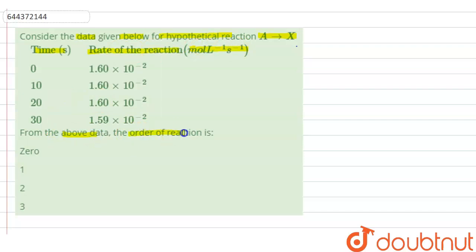From the above data, the order of reaction is. Here we have 4 options. Option A, 0. Option B, 1. Option C, 2. Option D, 3.